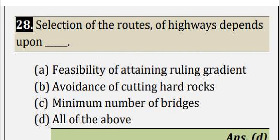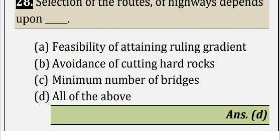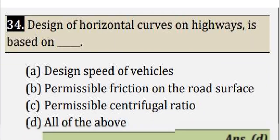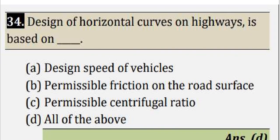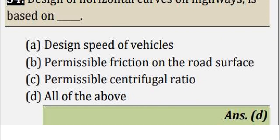Selection of the road or highway depends upon feasibility of attaining ruling gradient, avoidance of cutting hard rocks, minimum number of bridges - all of the above is correct, option D. Next, question 34: Design of horizontal curves on highways is based on design speed of vehicles, permissible friction on road surface, permissible centrifugal ratio. In horizontal curve design, we consider design speed, permissible friction, and permissible centrifugal force - all of these aspects, so option D is correct.